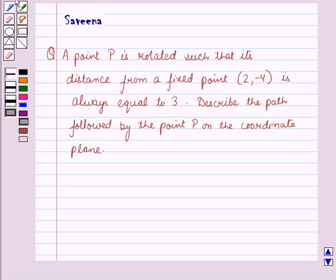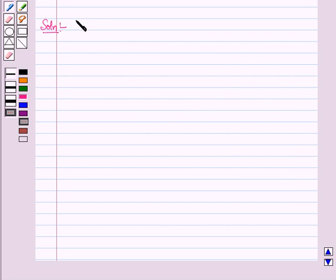Hello and welcome to the session. In this session we will discuss a question which says that a point P is rotated such that its distance from a fixed point (2, -4) is always equal to 3. This tells the path followed by the point P on the coordinate plane. Now let us start with the solution of the given question.